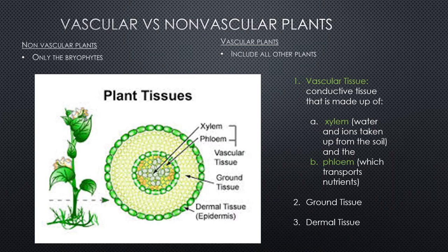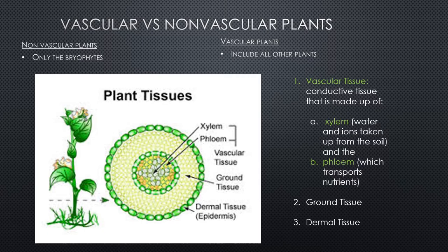Let's talk about vascular versus non-vascular plants in more detail. The only non-vascular plants are the bryophytes; all others are vascular. Vascular tissue — xylem and phloem — is conductive tissue. Xylem transports water, ions, and minerals up from the soil into the tissues that require them. Phloem transports nutrients throughout the plant.